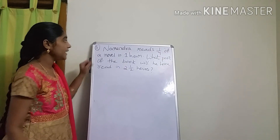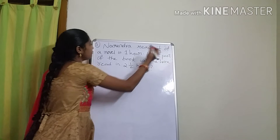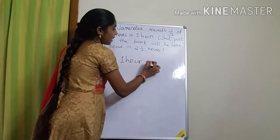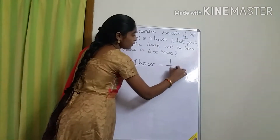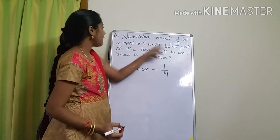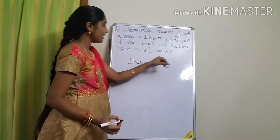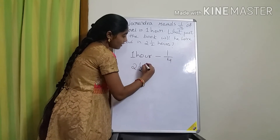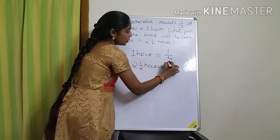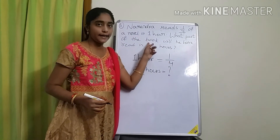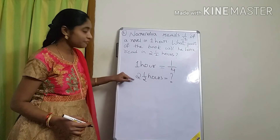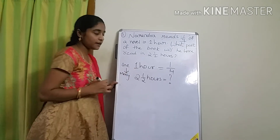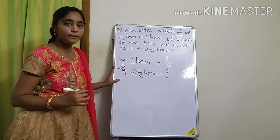Third question: Narendra reads 1/4 of a novel in 1 hour. What part of the book will he have read in 2 and a half hours? In 1 hour he reads 1/4 part. They are asking for 2 and a half hours. Given for 1, asking for many — that means multiplication. Given for 1 hour, asking for many hours — so multiply.